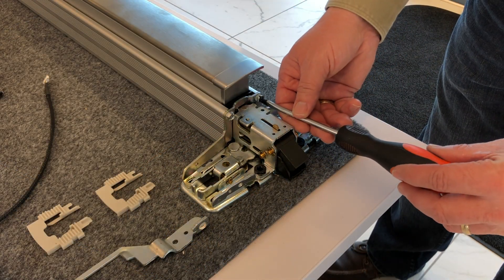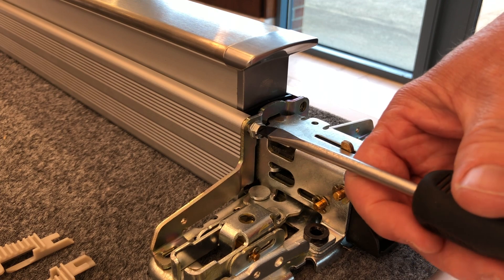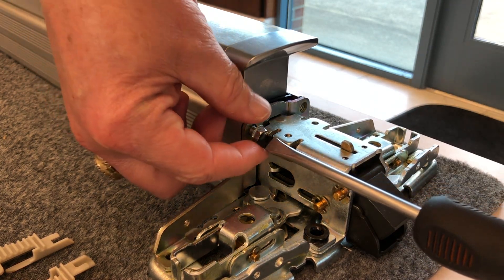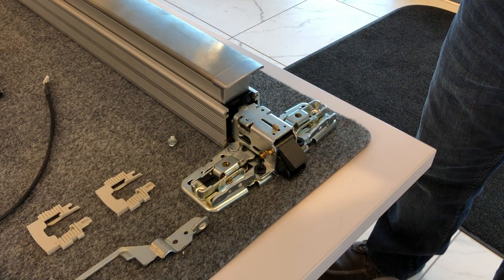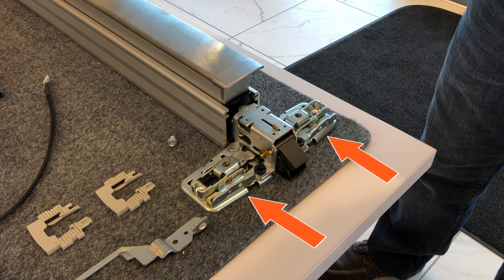Remove the two small screws that secure the support bracket connecting the center case and mechanism case. Then, remove the bracket. Check if the other support bracket is removable. If it is removable, remove and discard it. In this video, the bracket cannot be removed.